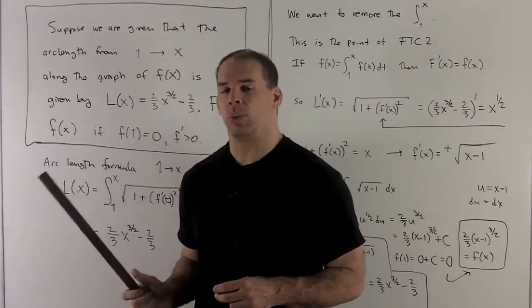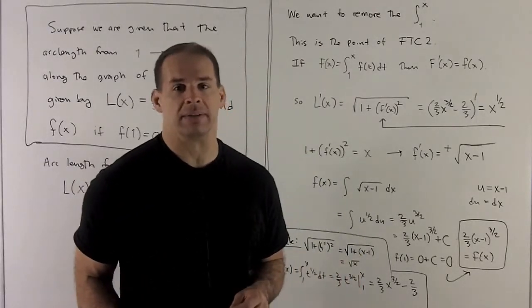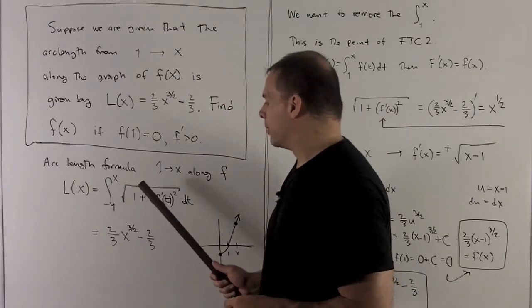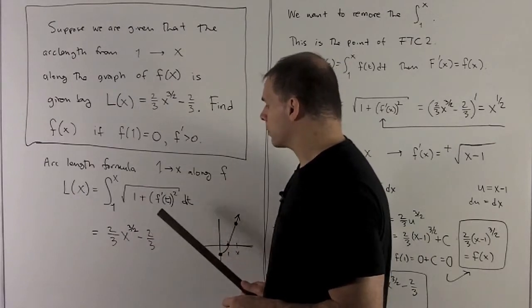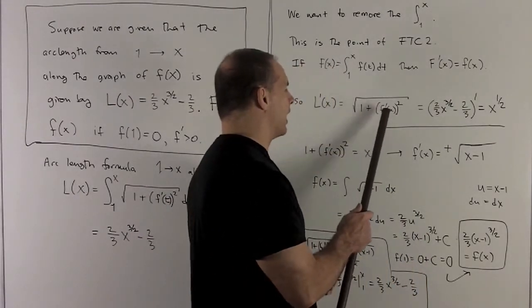So what we're trying to do is, we want to get rid of that integral sign, so the way we get rid of it is by taking a derivative. So when I take the derivative of L, what will happen? I'm going to throw away the integral sign, wherever I saw t in this piece, I'm going to put an x. So that's going to give me sqrt(1 + f'(x)^2).